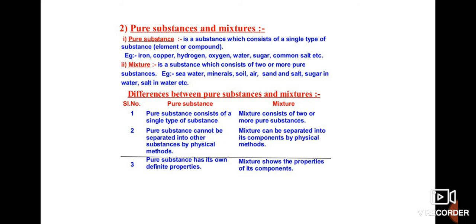Pure substances consist of a single type of substance, whereas mixtures consist of two or more different types of pure substances. Common examples of mixtures include sea water, mineral soil, air, sand, salt in water, and sugar in water. The key difference: pure substances consist of a single type of substance, whereas mixtures comprise two or more different types.